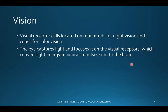First is vision. When it comes to vision, the organ related to it is the eye. Visual receptor cells are located on the retina — rods for night vision and cones for color vision. The eye captures light and focuses it on the visual receptors, which convert light energy to neural impulses sent to the brain.